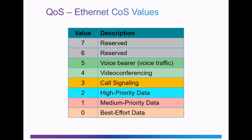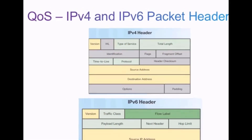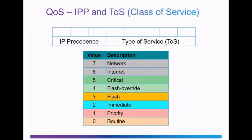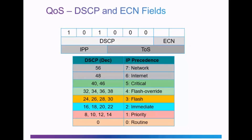Bits 6 and 7 are reserved for network control information. At Layer 3, QoS is implemented in the IPv4 and IPv6 packet headers in the type of service field and the traffic class field. In the older implementation, class of service at Layer 3 was implemented using IPP and TOS. The IP Precedence is 3 bits and the type of service is 5 bits, making up 8 bits total. The classifications have 8 levels, which map to the Layer 2 class of service. These include routine, priority, immediate, flash, flash override, and critical. Values 6 and 7 are reserved for network control information. The current implementation of QoS uses the Differentiated Services Code Point and Explicit Congestion Notification fields, or DSCP and ECN.